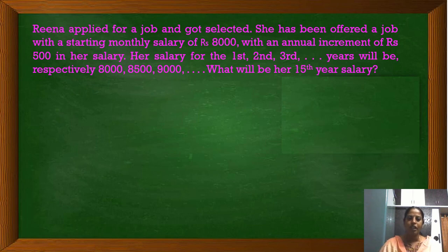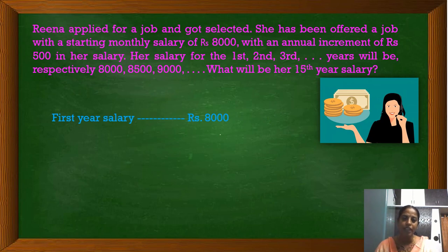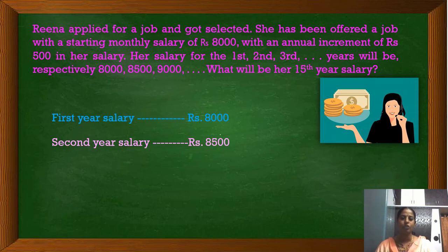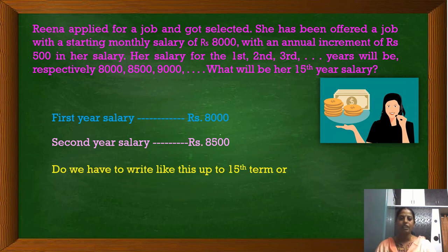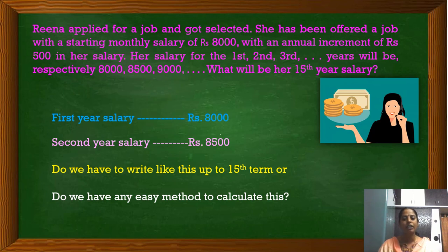Rina's 1st year salary is Rs. 8000. Every year she is going to get Rs. 500 as annual increment. Hence, the salary in the 2nd year is Rs. 8500. We have to find the 15th year salary of Rina. Do we have to write this up to the 15th term — that means adding 500 each year? Or do we have an easy method? Yes, we have an easy method to calculate this.